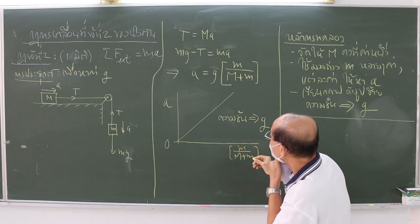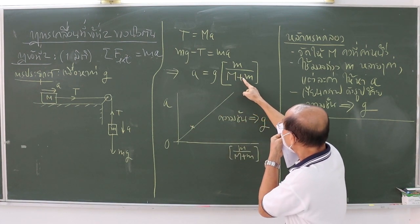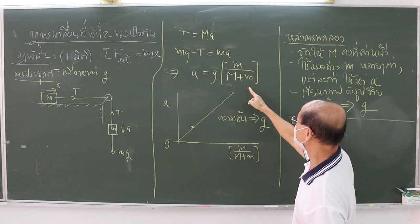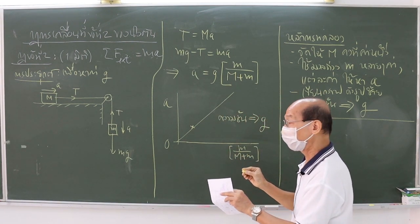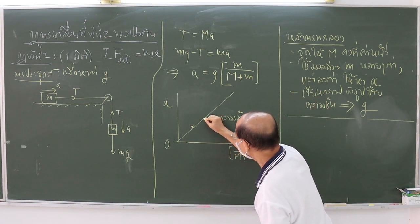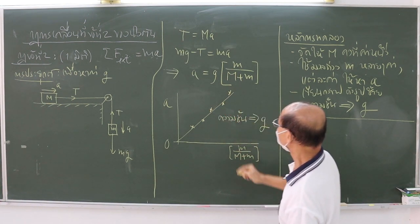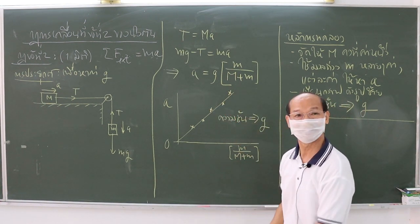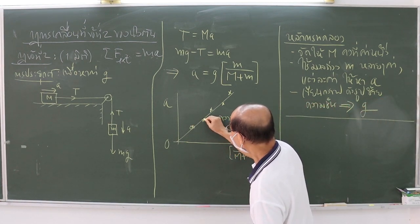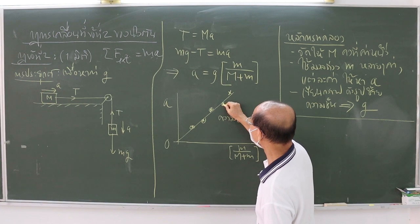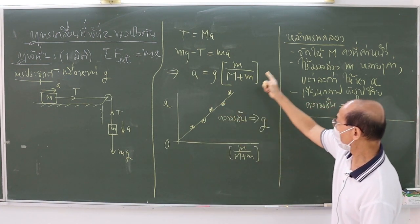For example, we may use five different values of lower m, and for each m we measure the corresponding acceleration A. Your plot contains five points, similar to the one shown on the board.